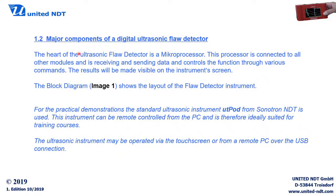Let's first take a look at the major components of a digital ultrasonic flaw detector. The heart of an ultrasonic flaw detector is a microprocessor. This processor is connected to all other modules, receiving and sending data and controlling functions through various commands. The results will be made visible on the instrument screen. The block diagram on the next page shows the layout of a flaw detector instrument.